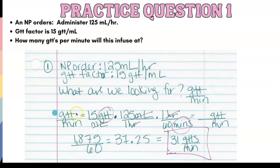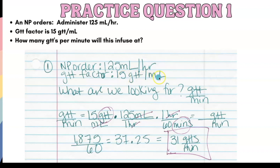Drops per minute goes here on the left-hand side, and we put drops at the top. What in the math problem has drops in it? We have drops right here — 15 drops per milliliter. So we put 15 here. What's drops married to? When you have these two fractions, they are married together — you don't separate them. They're in their honeymoon phase. So you're putting 15 drops and then it's married to ml. We put ml here at the bottom.